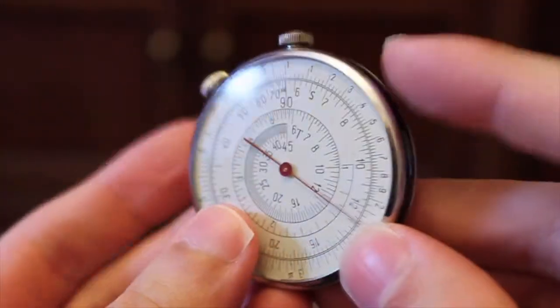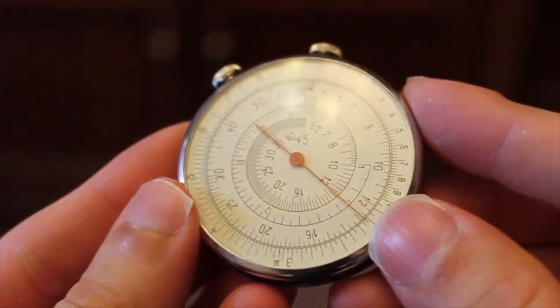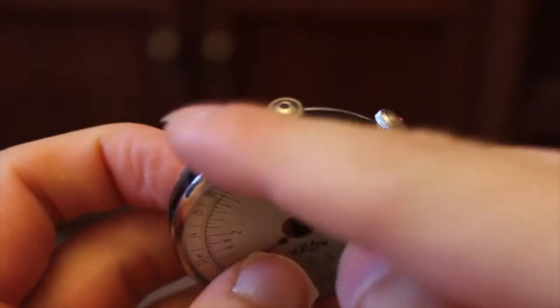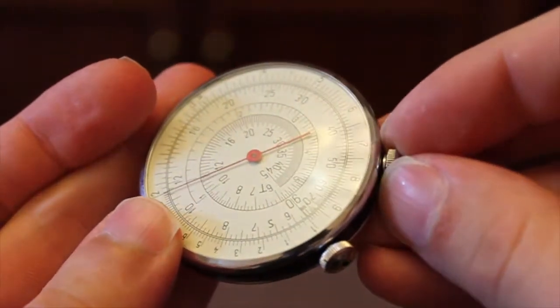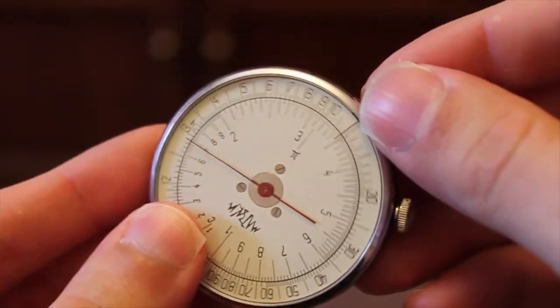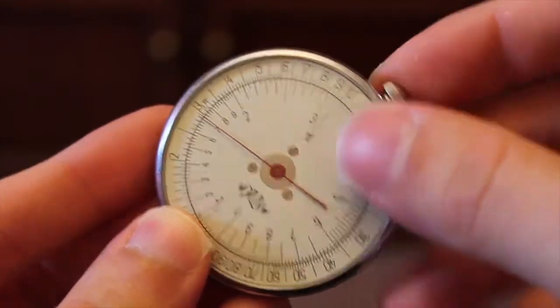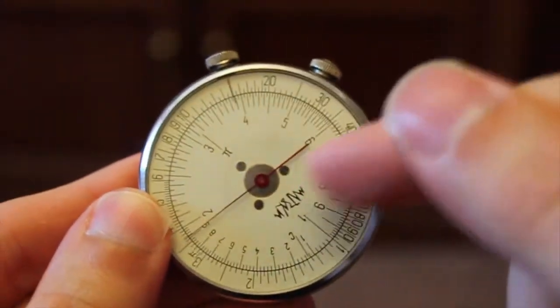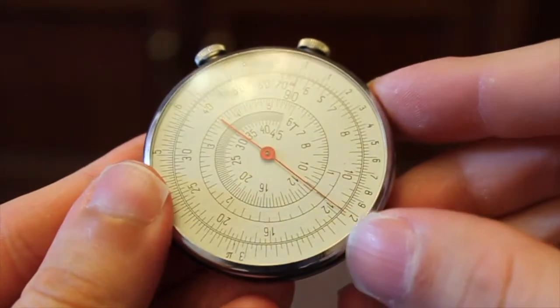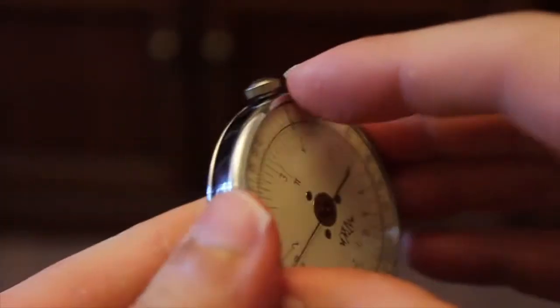This guy is called a Circular Logarithmic Ruler. And it has two sides and two rotating caps, one of which controls both arrows, and this other guy rotates the dial on one side only. And this thing is actually a calculator. And let me show you how it works.